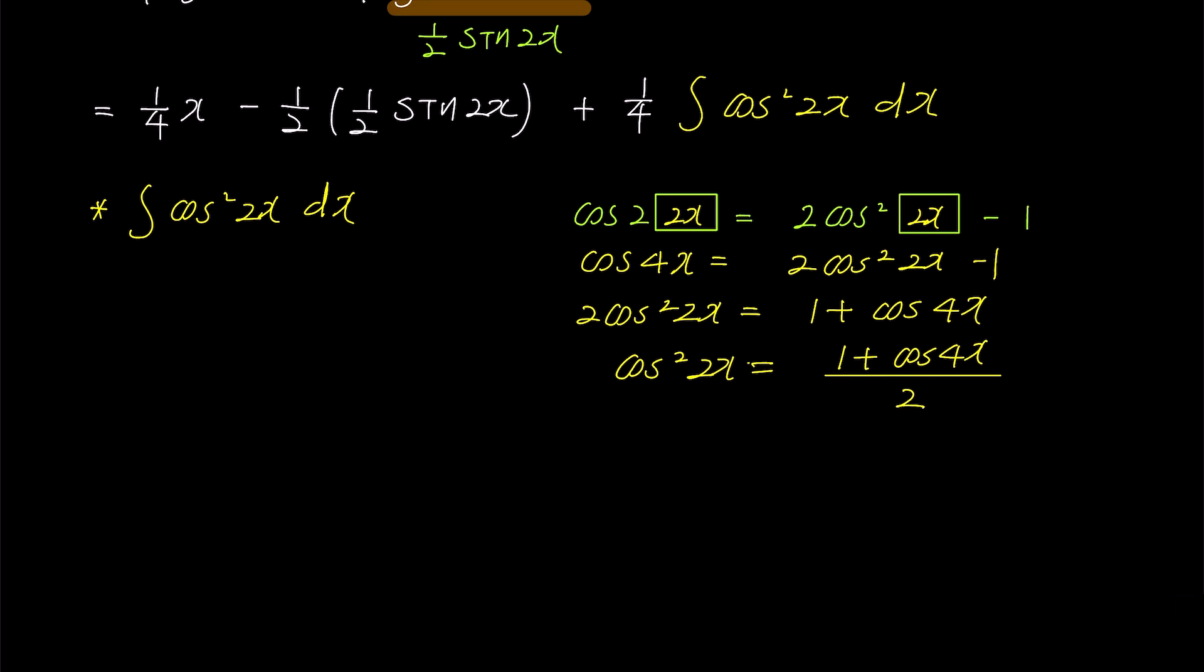Substituting this derived formula into the integral, we have integral 1 plus cosine 4x over 2 dx. Expanding the equation, it becomes half times integral 1 dx plus half times integral cosine 4x dx.